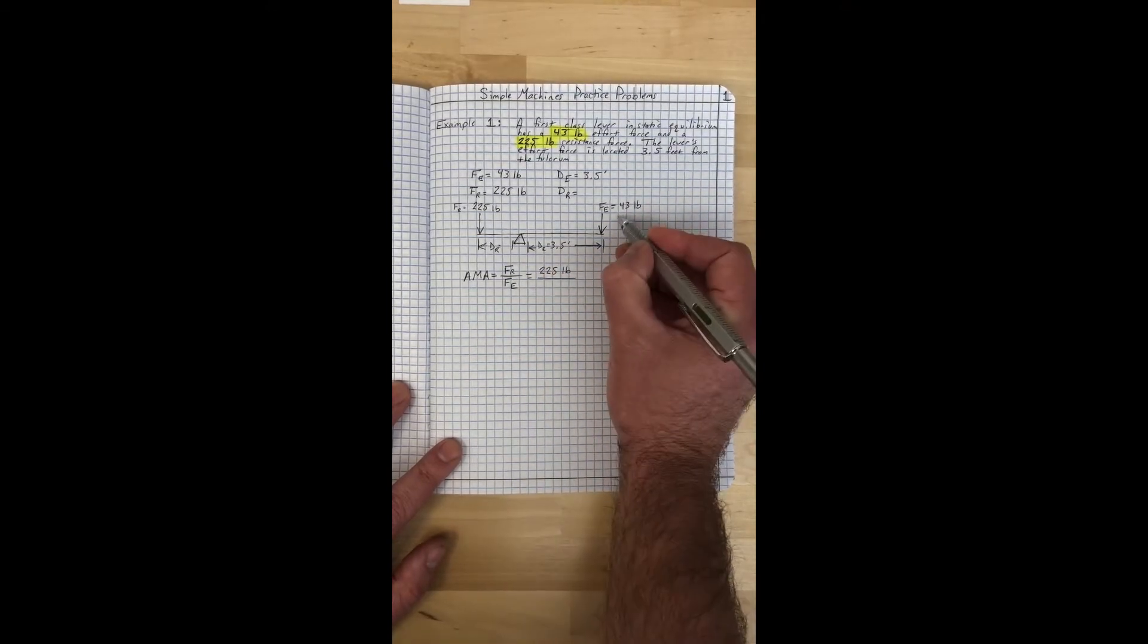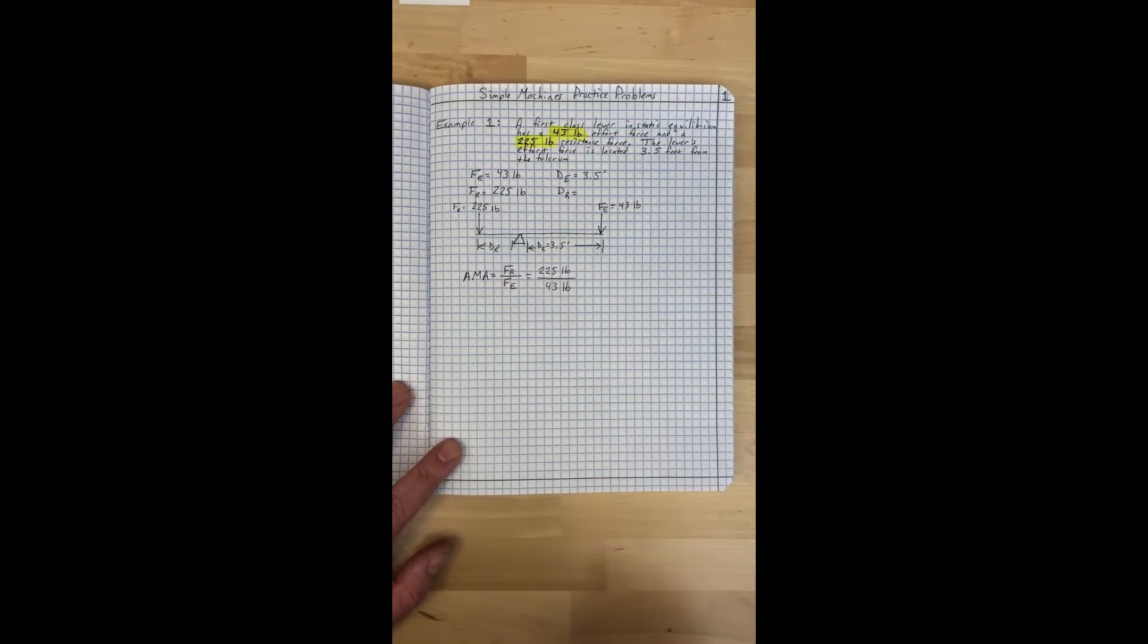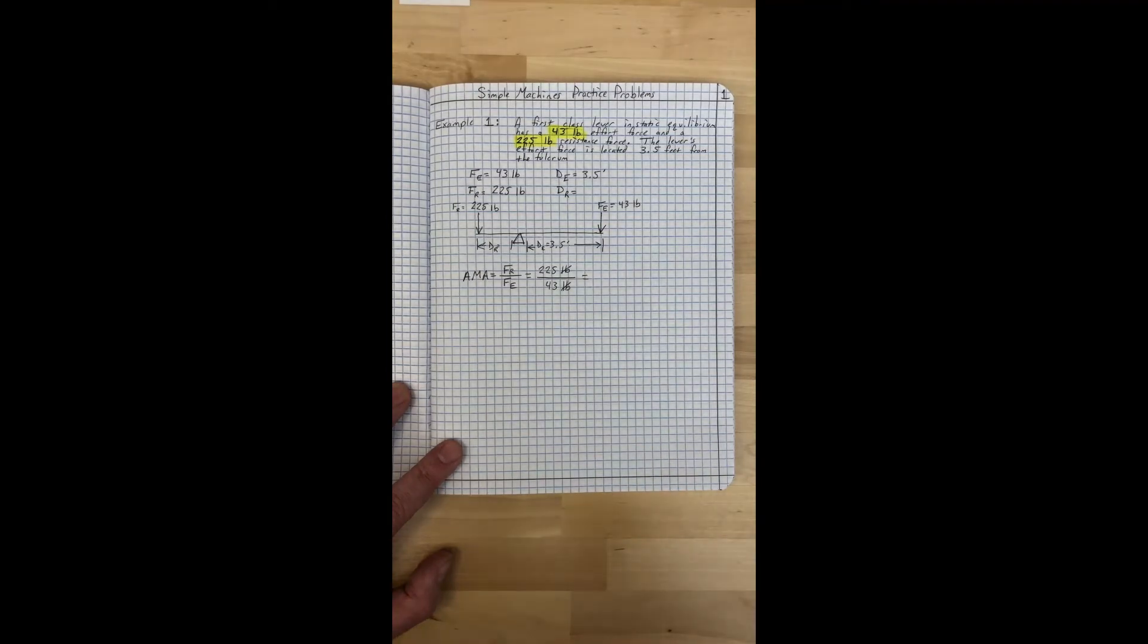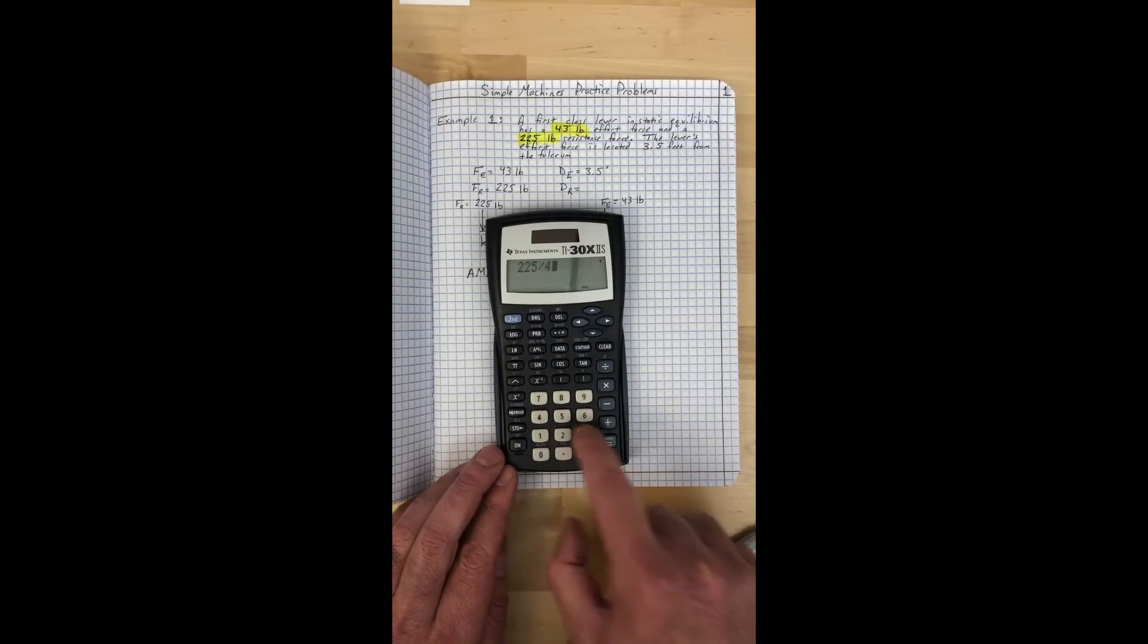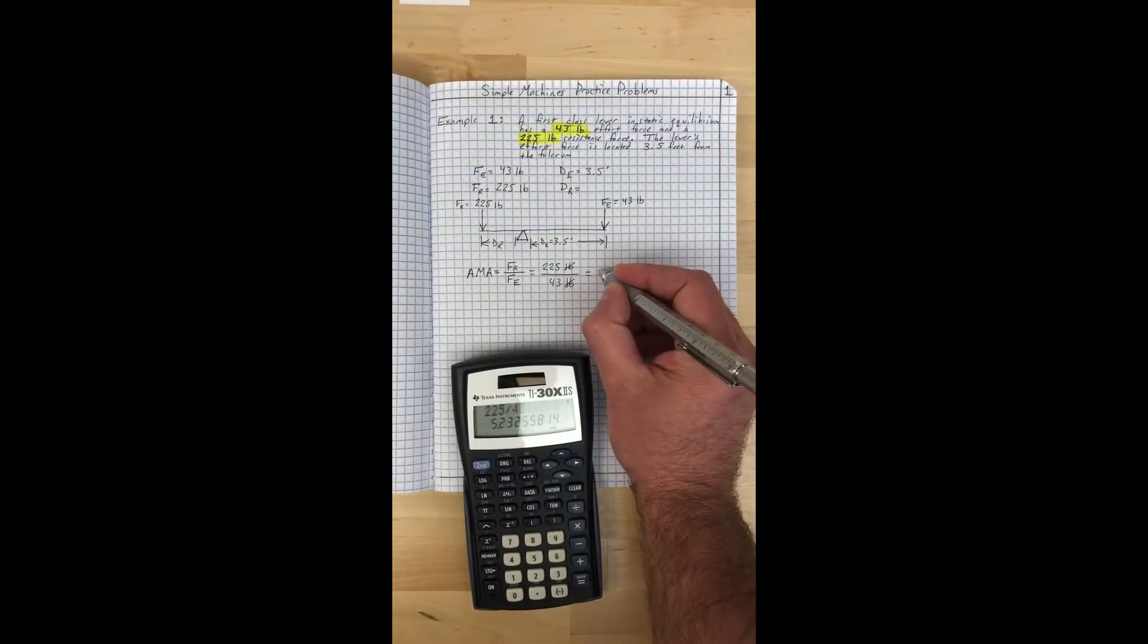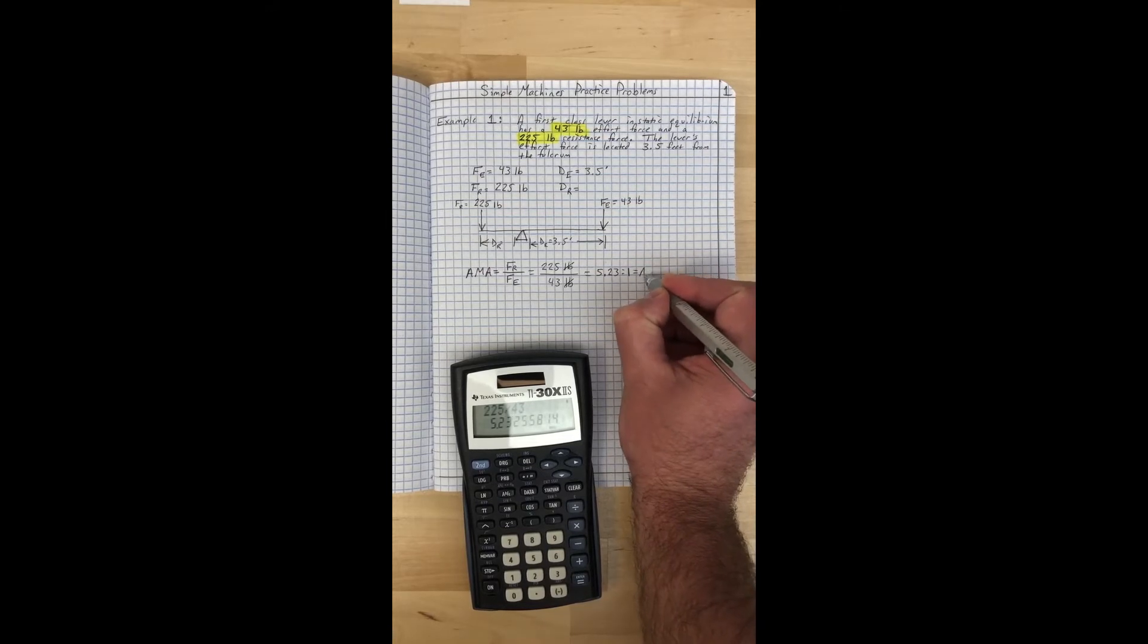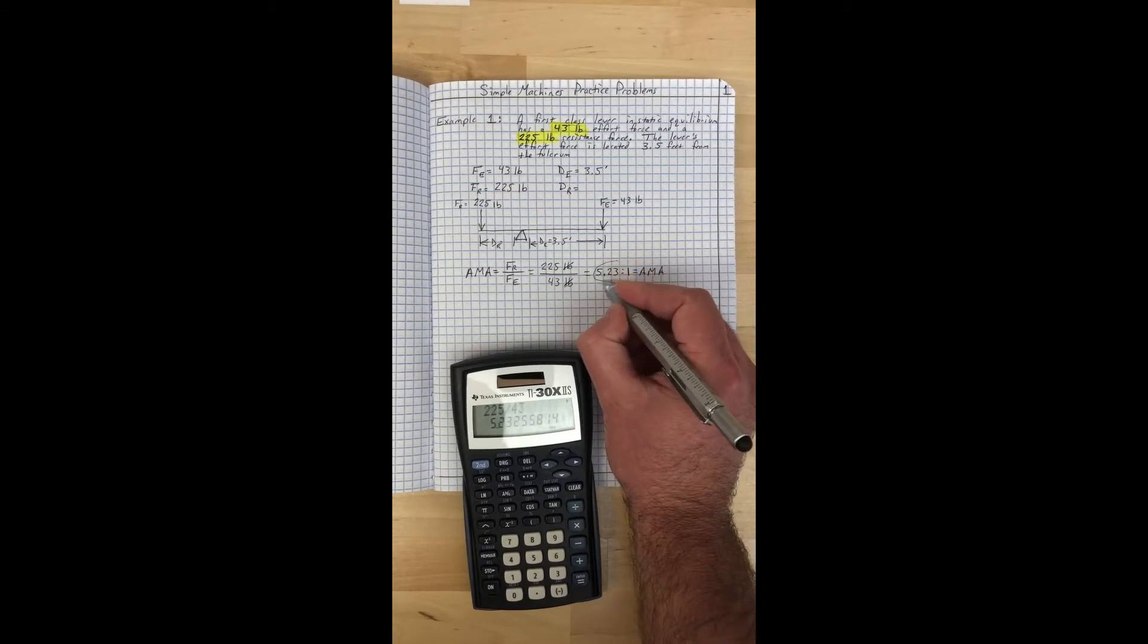That's going to be divided by the effort force of 43 pounds. When you go to do this problem, you can just punch in 225 divided by 43 and you'll end up with 5.23. Remember we're always writing mechanical advantage as a ratio, so it's 5.23 to 1 is your answer for AMA.